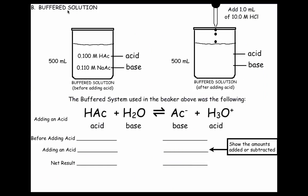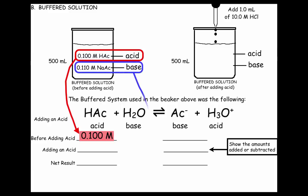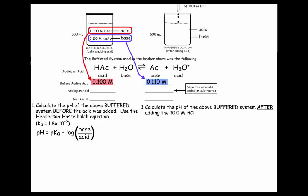The buffered system, by definition, it has a conjugate acid-base pair. Well, here it is. This is the acid, and this is its conjugate base. If we're going to fill out our little chart here, before adding any acid, because we're going to be adding some acid over here, but before adding it, the concentration is 0.100 molar of the acid, and the base amount is 0.110.